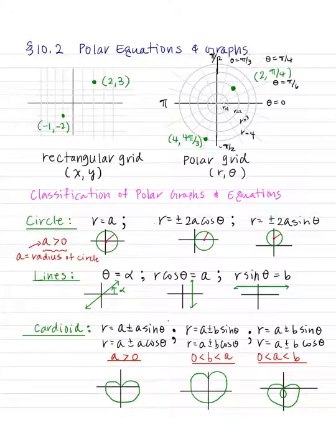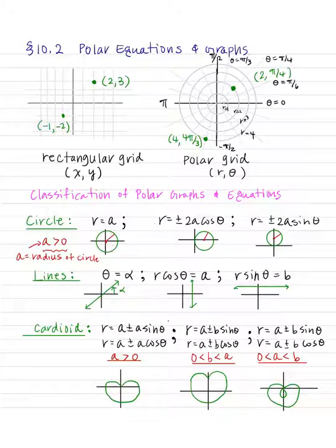So for instance, if I have (2, π/4), that means starting from radius positive 2, revolve positive π/4 units, and then you make a dot. However, that point is not unique — meaning there are multiple ways that you can express that point. That would be the huge difference between the rectangular coordinate system and the polar coordinate system.